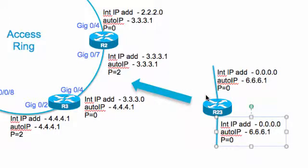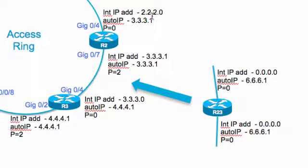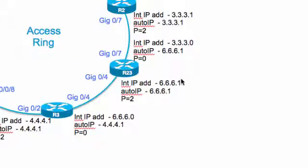We'll take R2.3 and insert it between R2 and R3. Once inserted, R2.3 gig0/4 connects to R3 gig0/4, and R2.3 gig0/7 connects to R2 gig0/7. Looking at the topology before R2.3 was inserted: gig0/7 was an owner with IP address 3.3.1, and gig0/4 was a non-owner with IP address 3.3.0 and auto IP address 4.4.1.